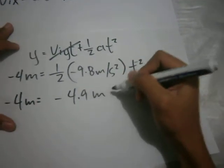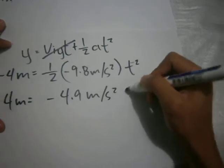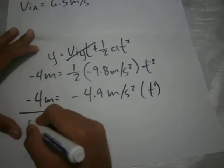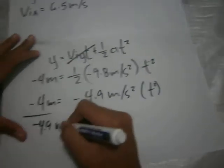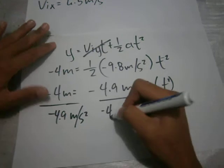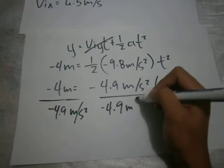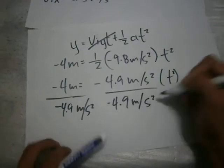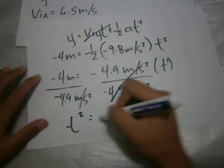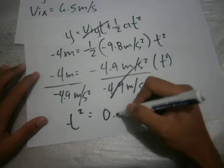So divide both by negative 4.9 meters per second squared. We get t squared equals 0.816 seconds squared.